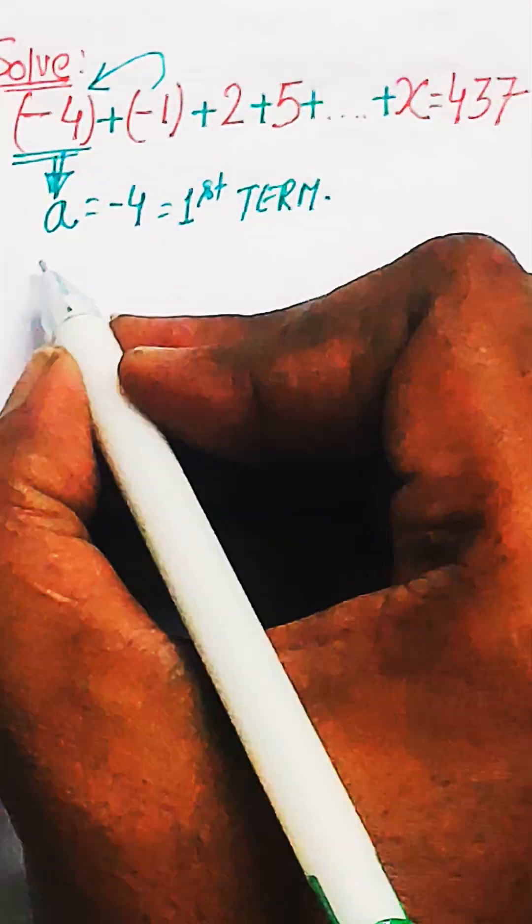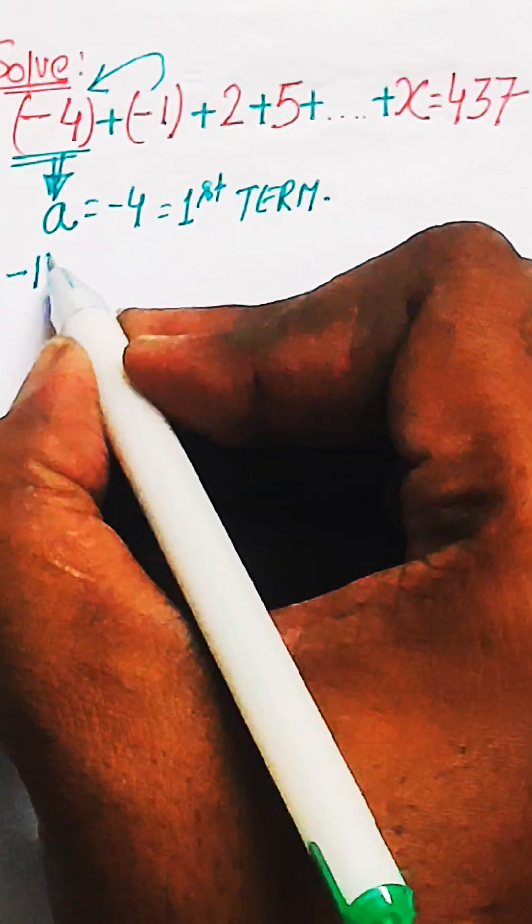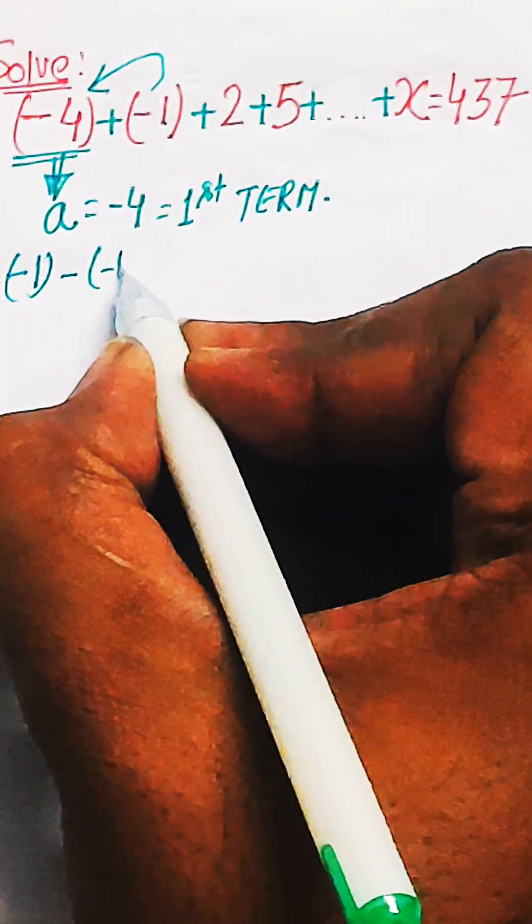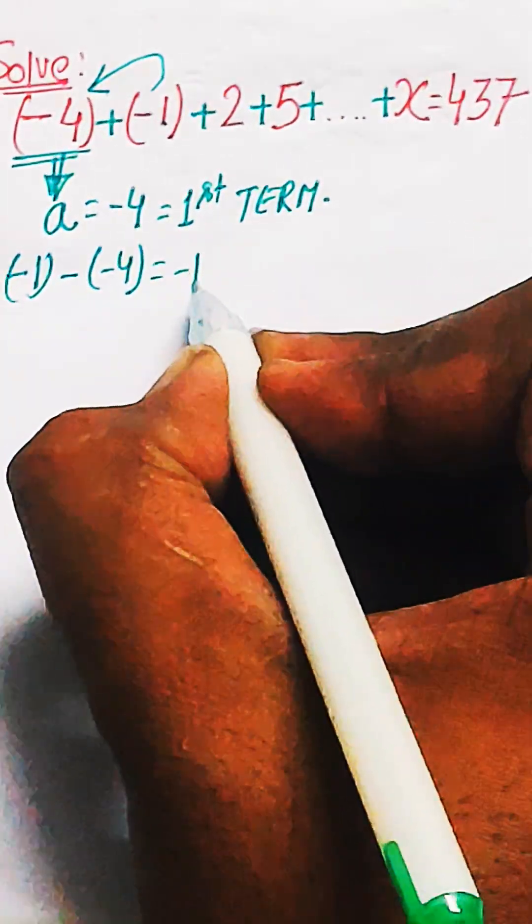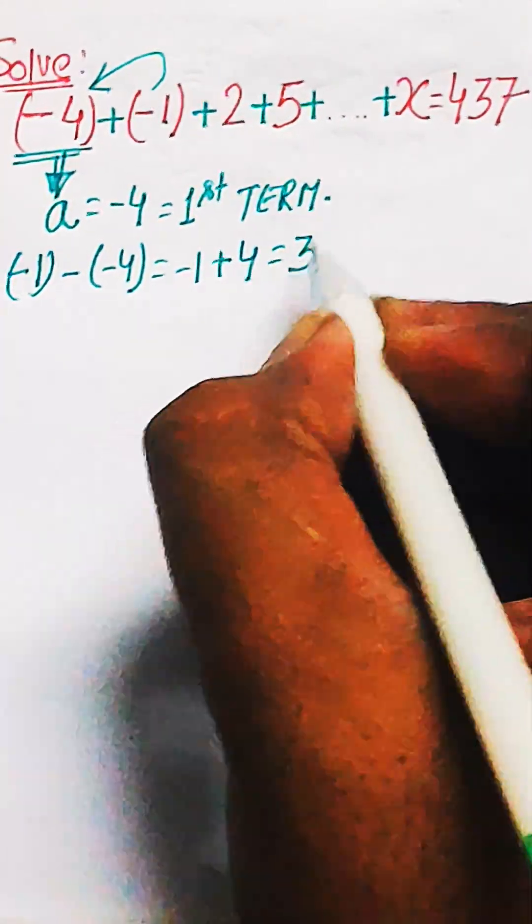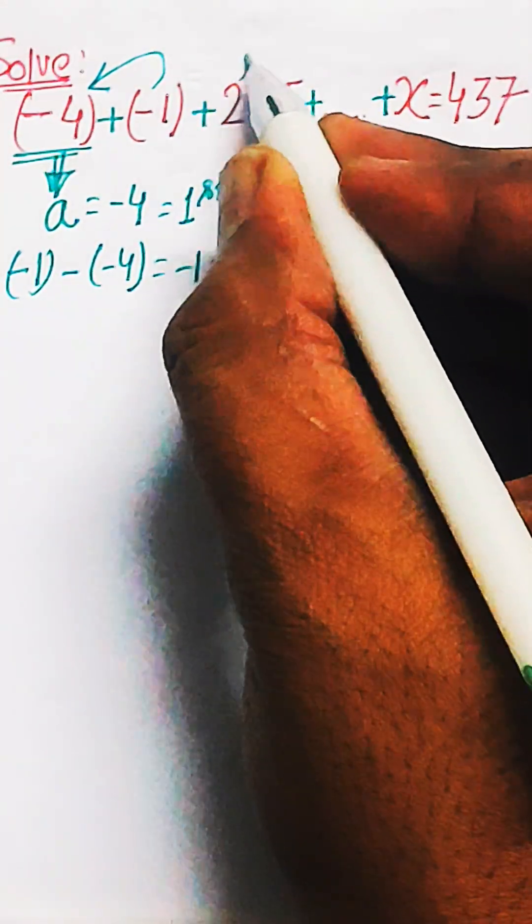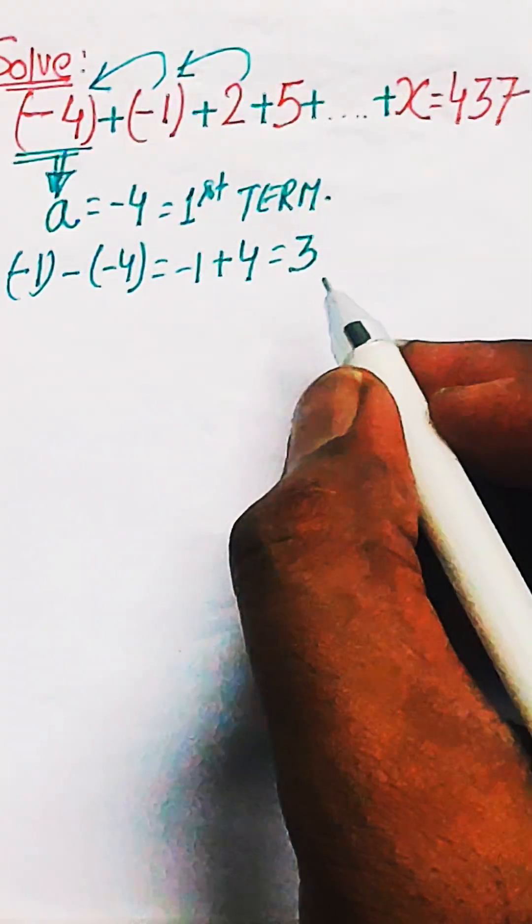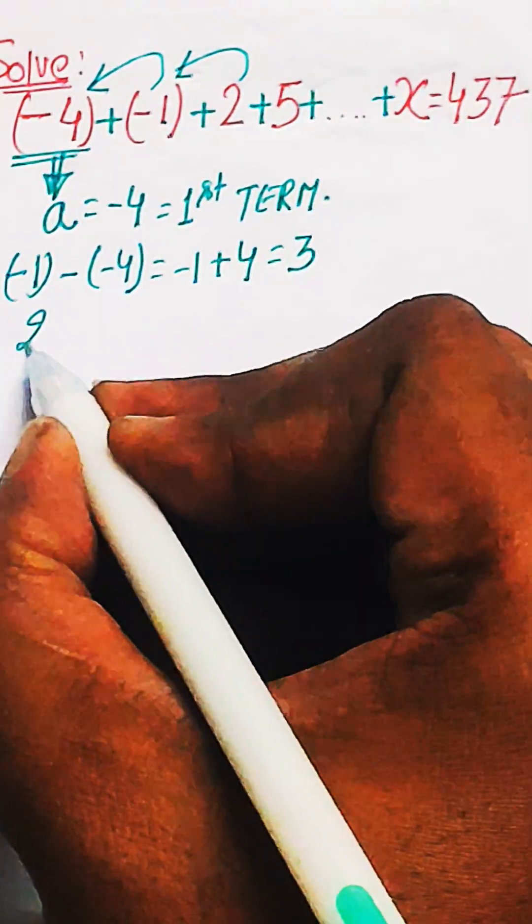Common difference can be calculated by subtracting one of the terms from its successive term. So minus 1 is the second term and minus 4 is the first term. So minus 1 minus minus 4 will be giving you 3. This is the common difference.